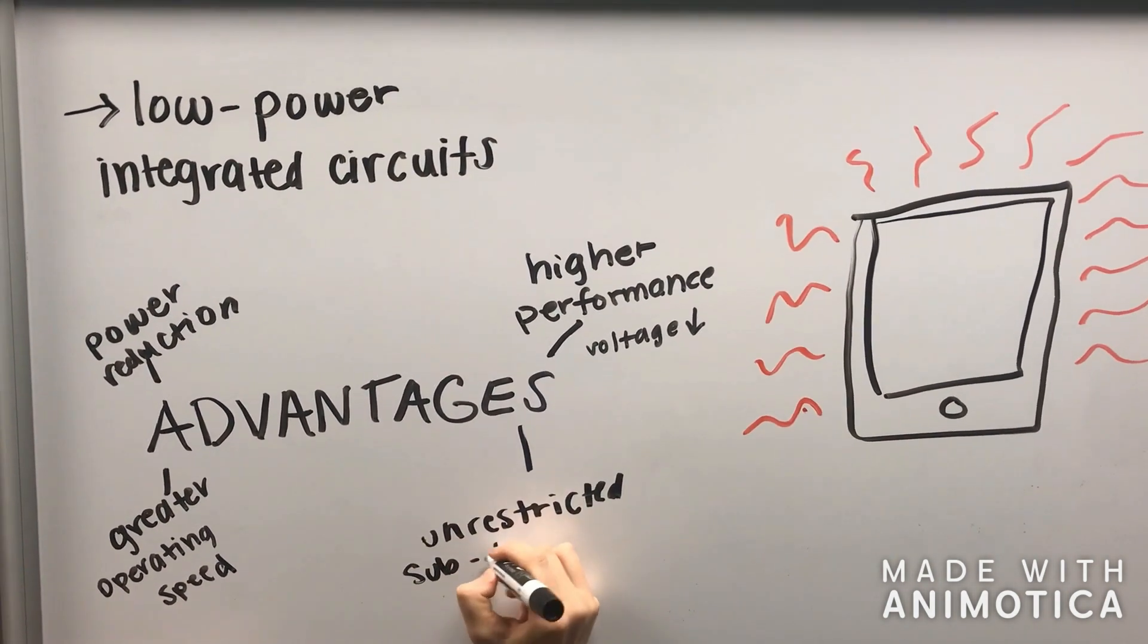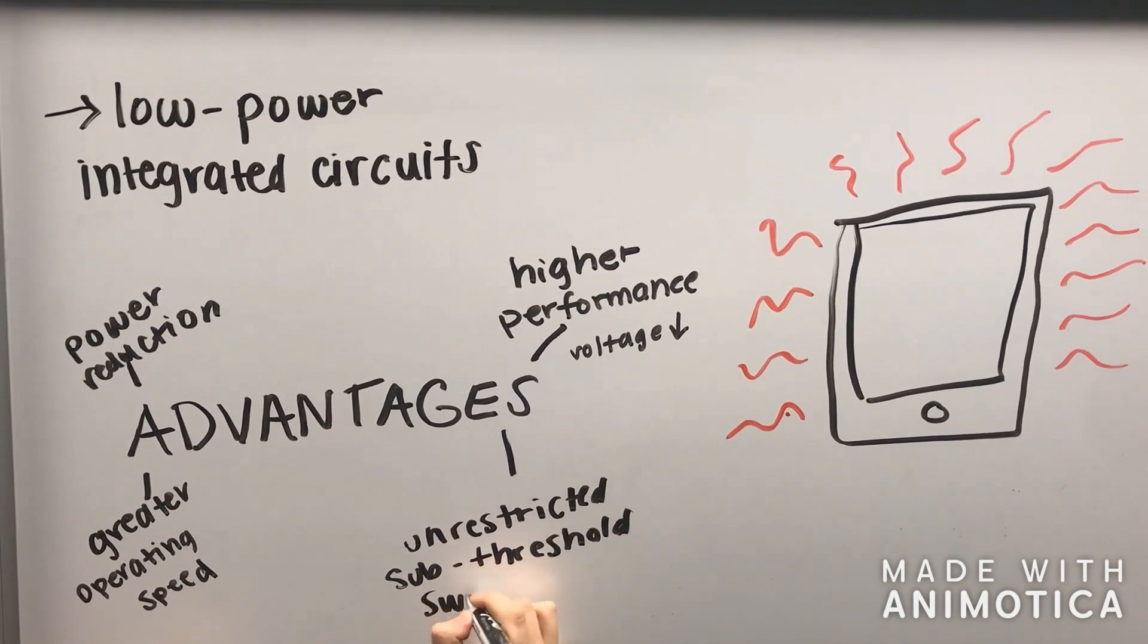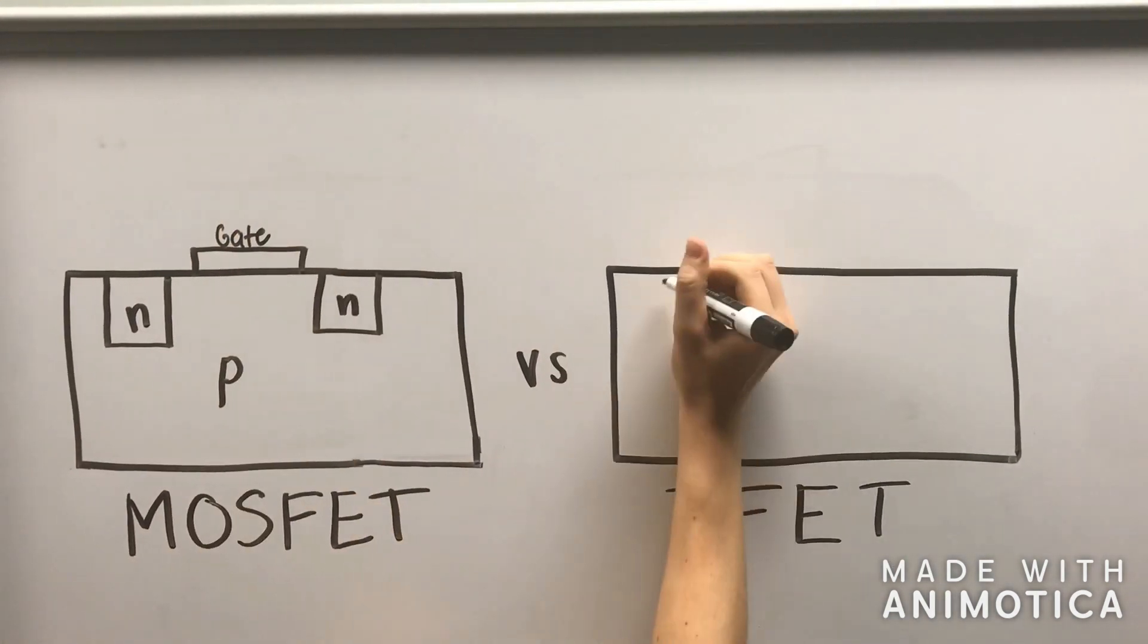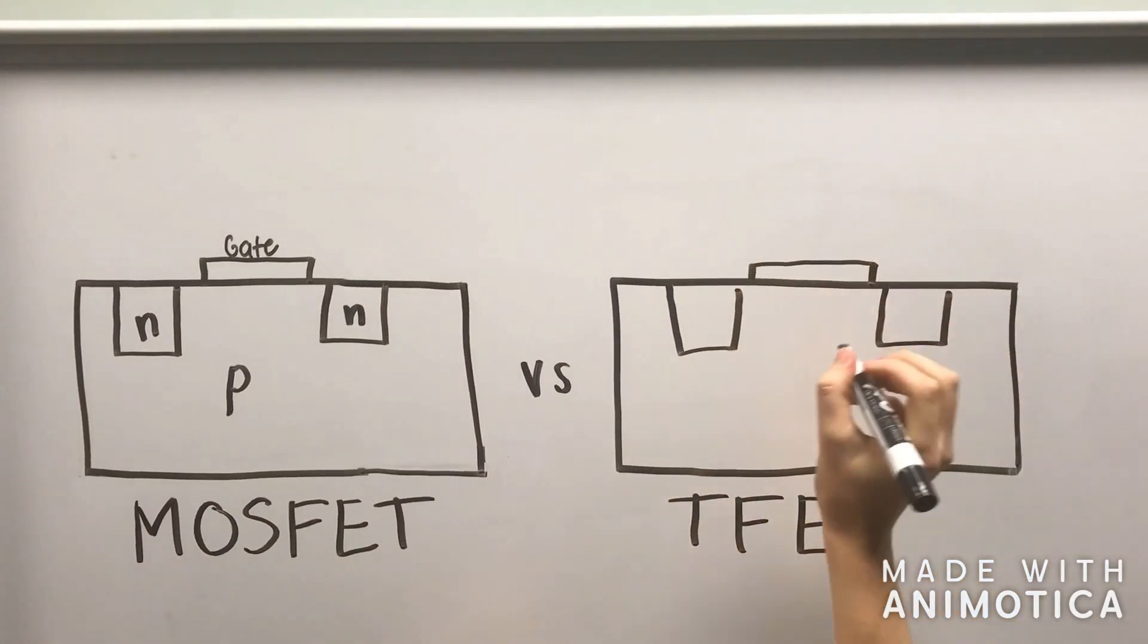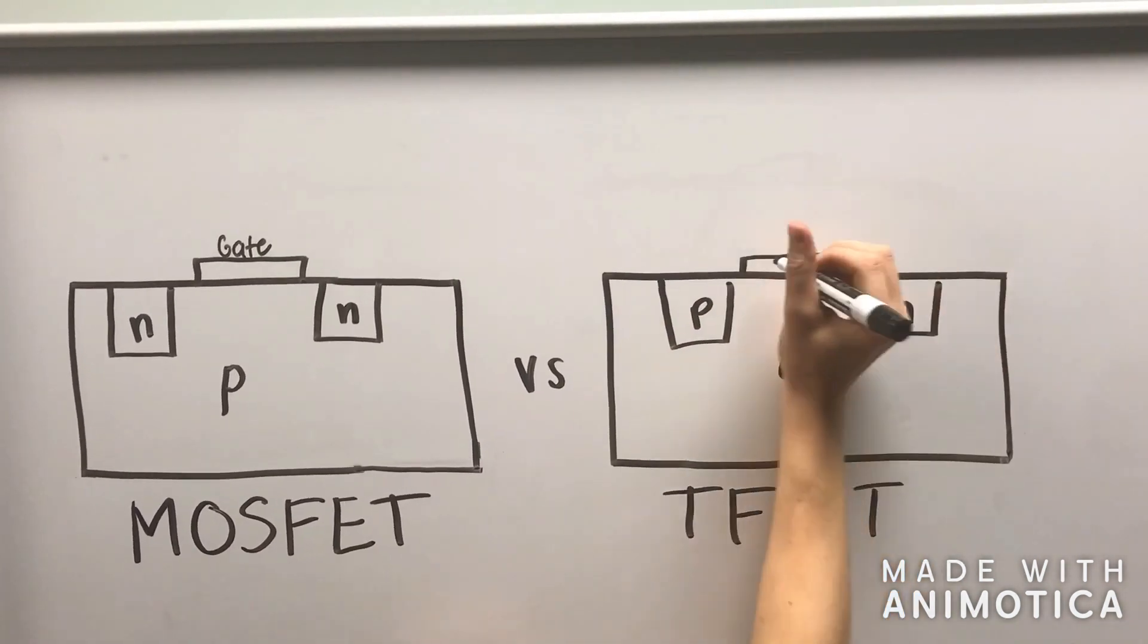The construction of the T-FET is similar to that of the MOSFET, except the source and drain are oppositely doped, and the bulk channel is made of intrinsic semiconductor.